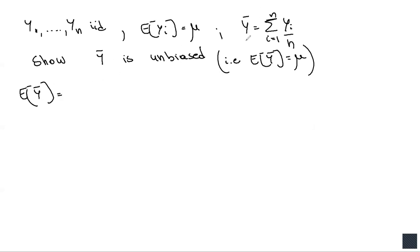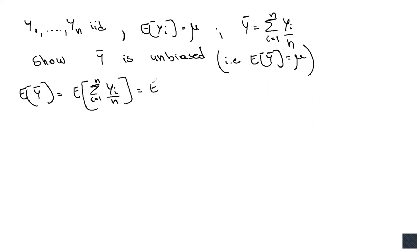Let's plug in for what we know y-bar is: it's just the sum from i equals one to n of yi divided by n. So this becomes the expected value of the sum from i equals one to n of yi divided by n. Notice that each term of this summation is divided by n, so we can write whatever's inside the expectation as one over n times the sum from i equals one to n of yi.